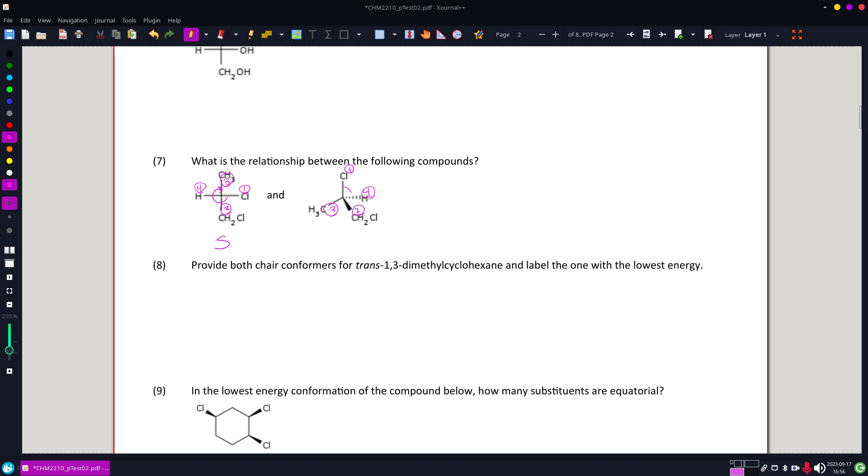Now on the left, I also have—how about on the right, I also have clockwise, but in this case, the fourth priority is in the back. So clockwise there is R, so these are enantiomers.